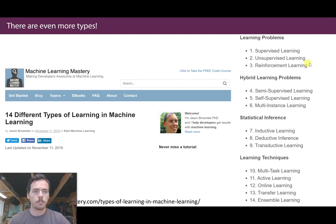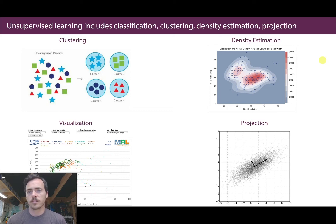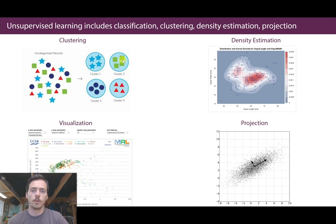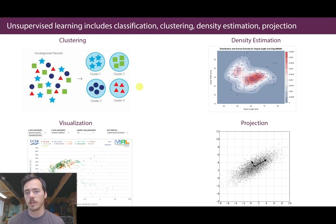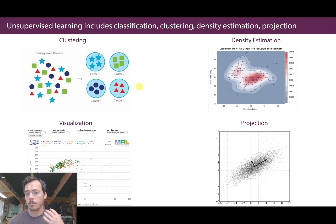Unsupervised learning includes clustering, density approximation, and projection. With clustering, if you have a bunch of uncategorized inputs — say shapes and colors — you could ask a machine learning algorithm to cluster them. The blue stars end up in one cluster, green squares in another, purple circles and red triangles each in their own. We have no target variable but clustering is still useful and meaningful. Google Photos does this — clustering cave images to find all your cave photos.